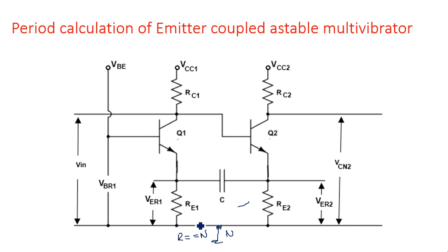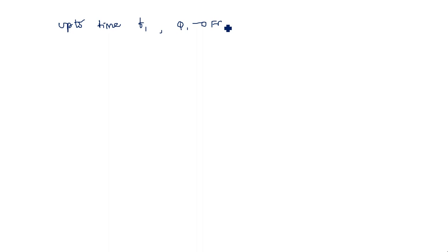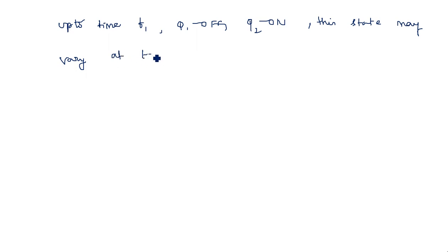Now we need to calculate the time period for the capacitor to charge or discharge. The interval T1 is when Q2 comes into conduction and Q1 goes into the off state. We assume Q1 is in the off state and Q2 is in the on state. This particular state will end at T2, and from T2 onwards the transistor Q1 will turn on and Q2 will turn off.